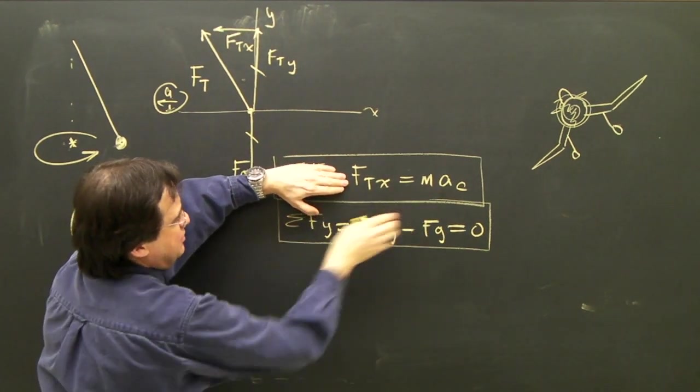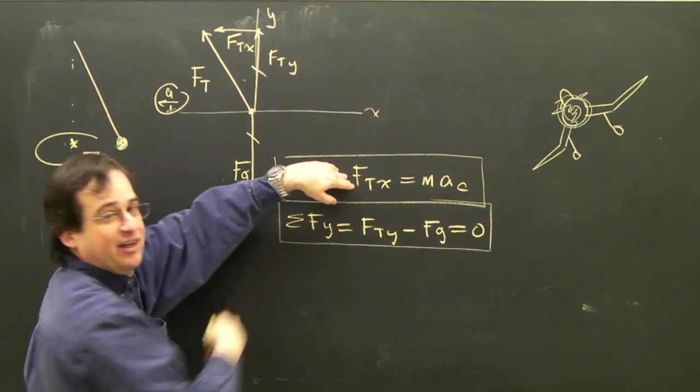This is what's important. ft,x is ma,c, and ft,y is that. I can figure out whatever I need.